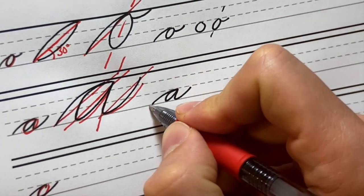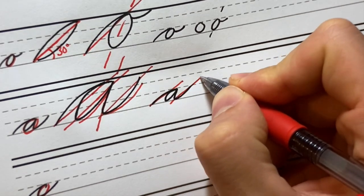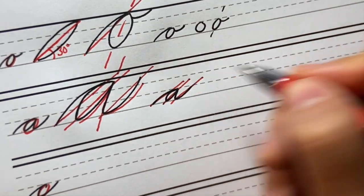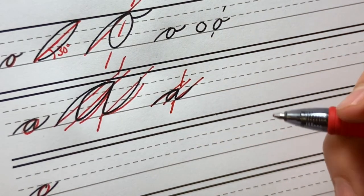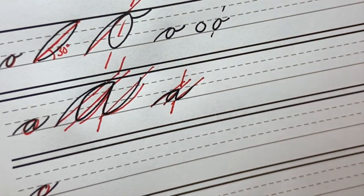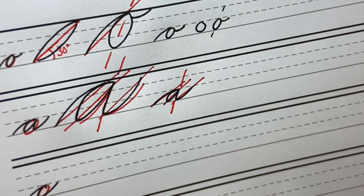Again, the main things to look for is that consistency of that connective slant on the beginning and ending and in the middle of the letter. And then this I part, this down stroke coming down on that main slant.